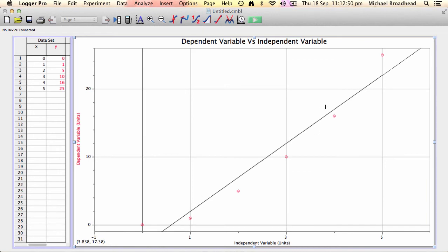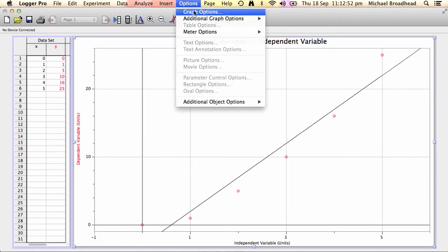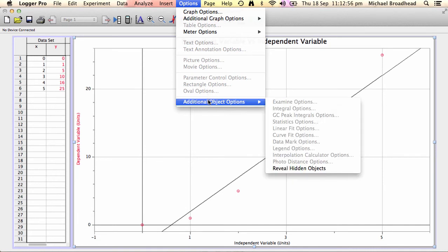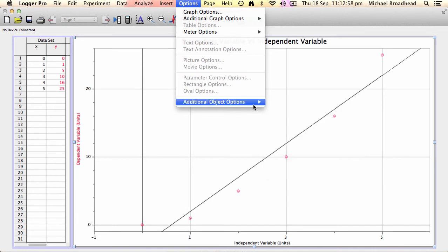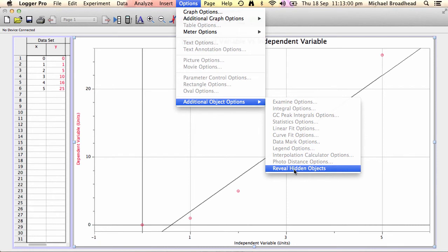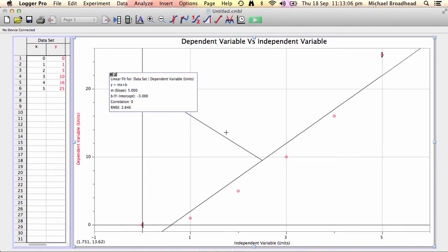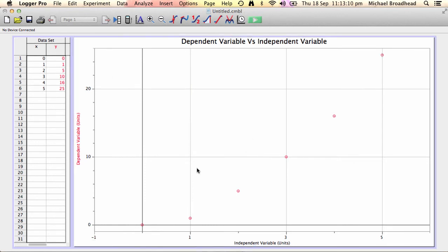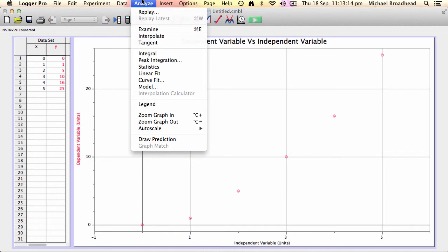So what we want to do is go to option and additional object options. And remember back we hid the equation, that little equation box. Now we need to click reveal hidden objects to bring that back so that we can click the X that removes the linear fit. That's the only way you can get rid of it; otherwise you can end up with two, the one we're about to put on and the original.